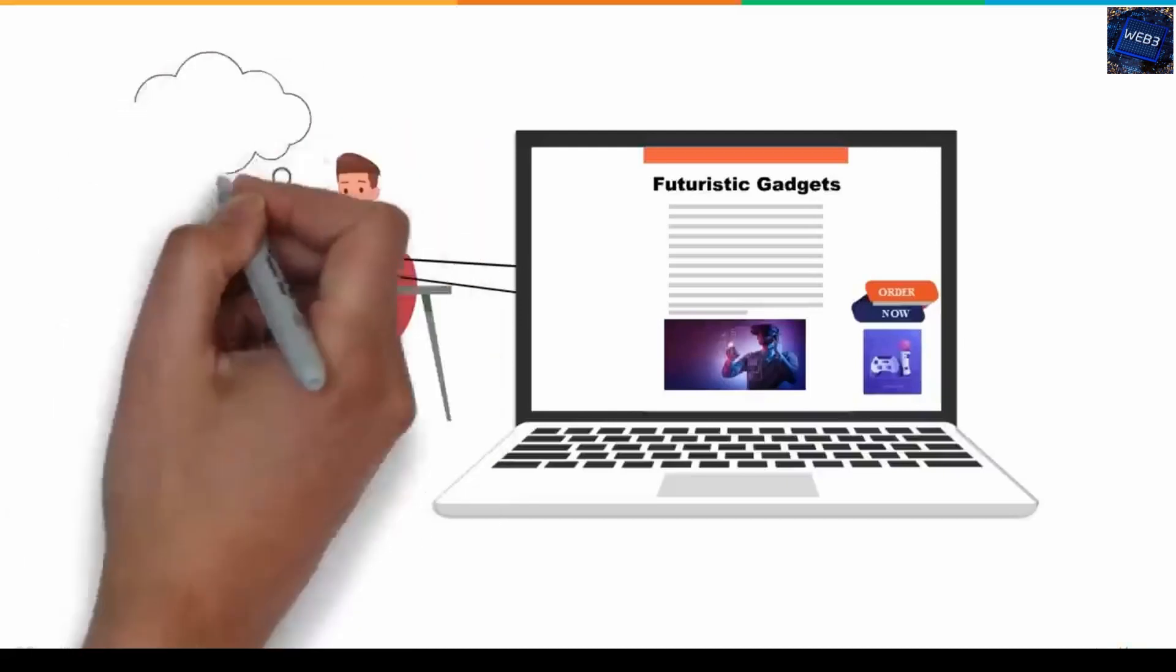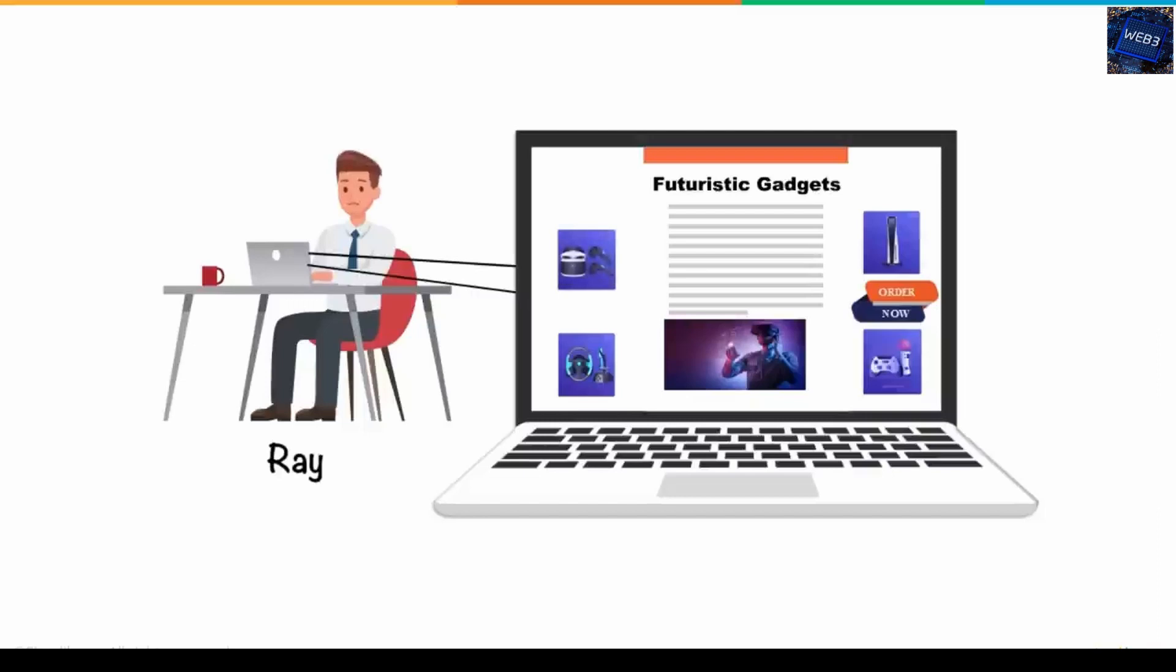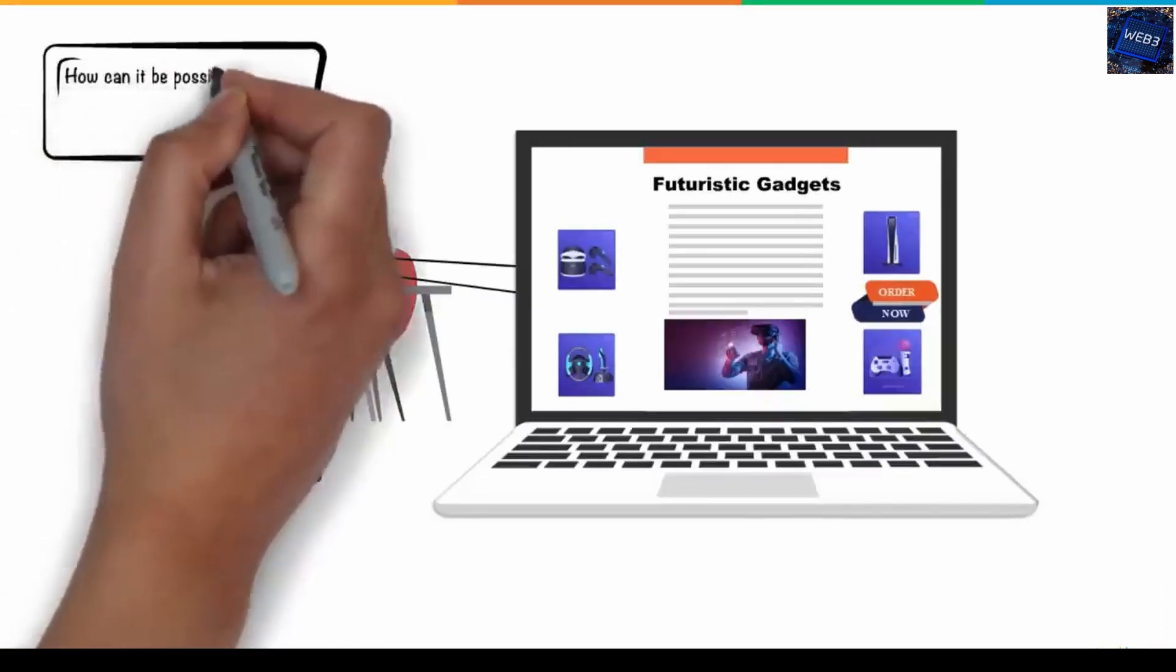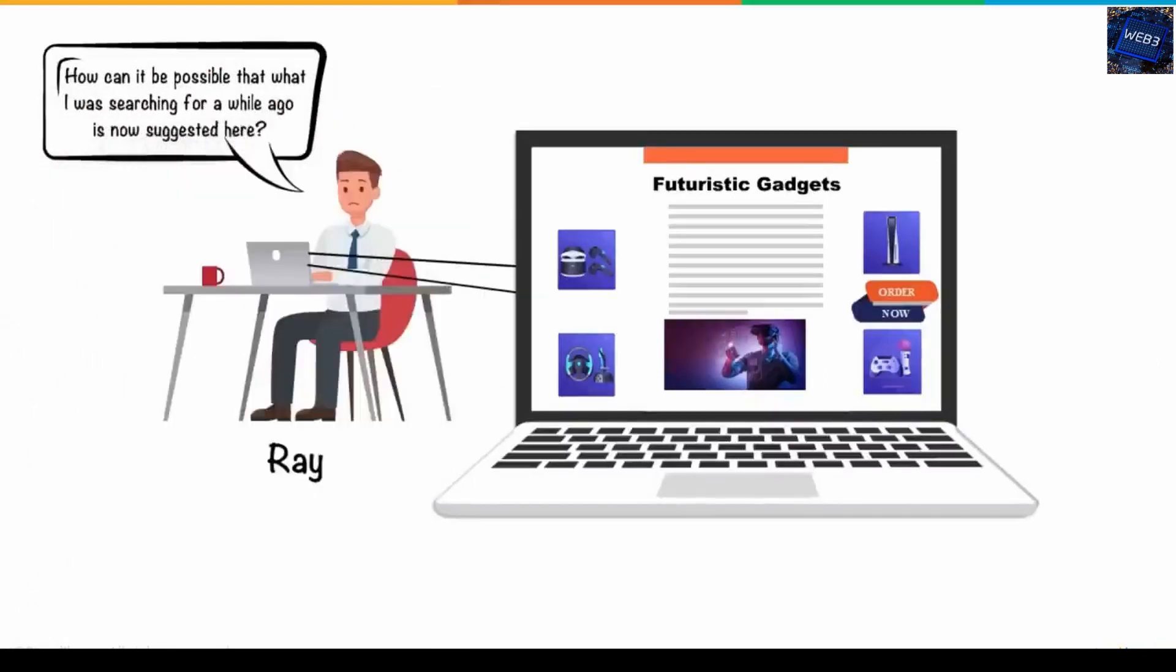He found it a little strange as he recalled searching for that just a few hours ago. Later that day, he came across some suggestive ads popping up related to buying future-leading gadgets. And that is when he freaked out, thinking, how can it be possible that what he was searching for just a few hours or days ago on the internet is now suggesting ads related similar to them?